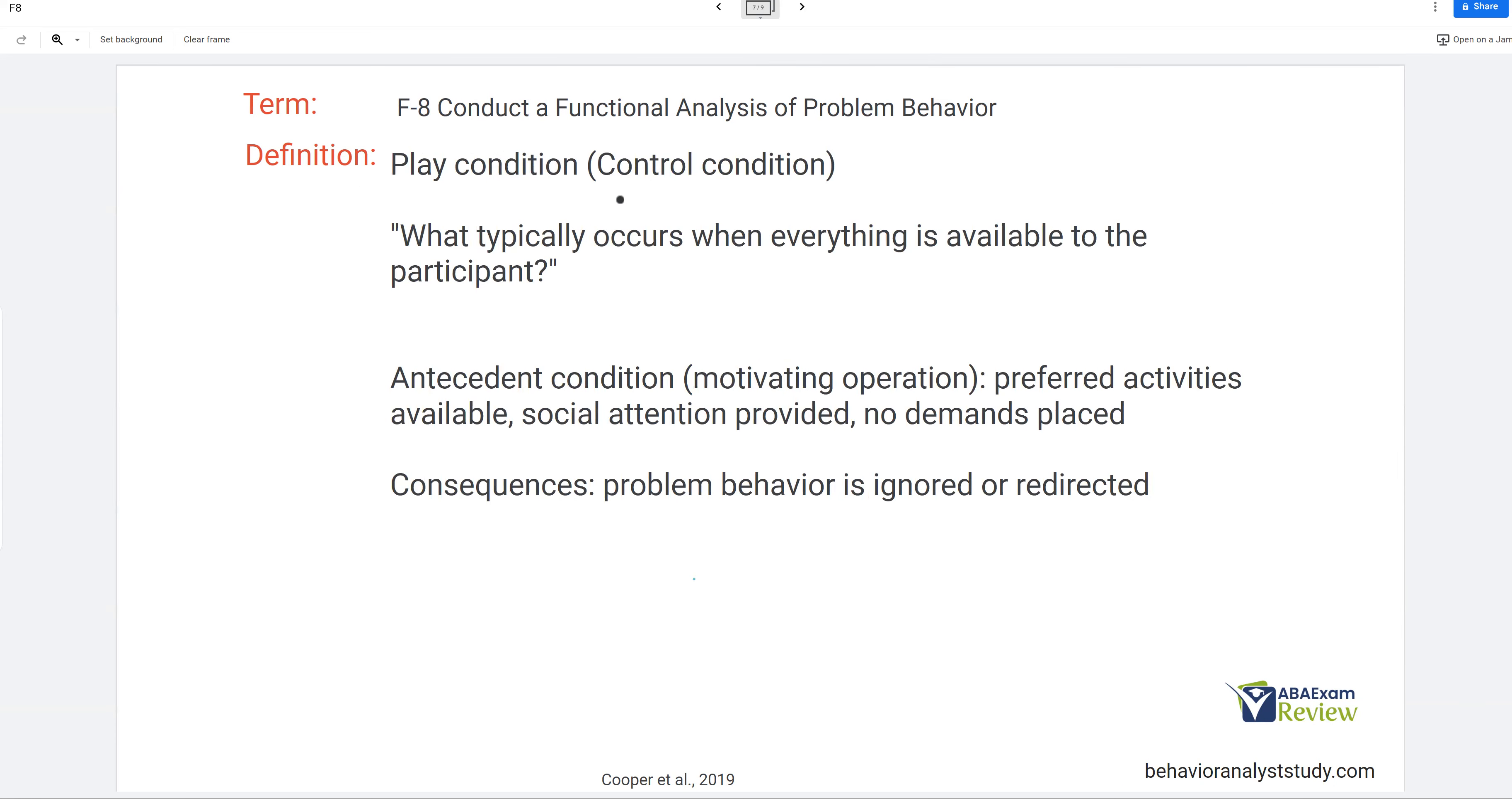Now, what about our control condition? The control condition is when everything is available to the participant. How does the participant act when everything is going great? So, they have all their activities, they have attention, there's no demands. So there's no need to seek attention, there's no need to seek tangibles, and there's no need to escape. Hypothetically, or in theory, the behavior should be great, given everything is available to the participant. If the problem behavior occurs, ignored or redirected. Now, if behavior happens during control, what might you hypothesize? Well, you might hypothesize that it could be automatic. If everything else is available, and it can't be functioning for these other options, automatic seems to be more than likely.